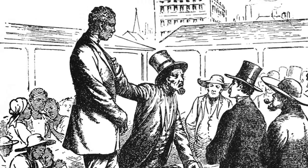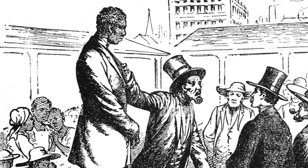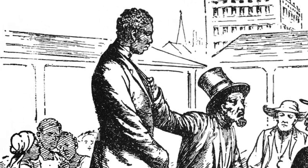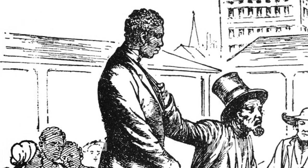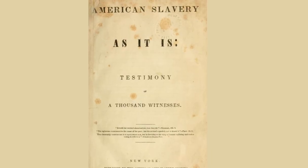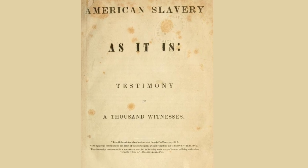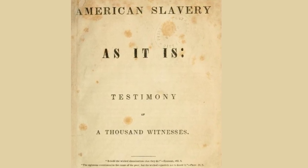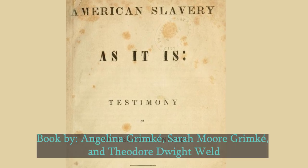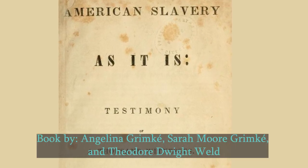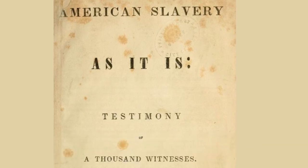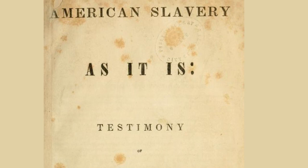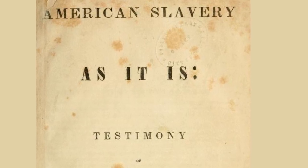Perhaps that is what makes Uncle Tom's Cabin so visceral — the stories of these fictional characters, of Uncle Tom and Eliza, George and Harry, were all too real. Stowe masterfully wove the real-life experiences of self-emancipated people into her story. She used books like American Slavery As It Is: Testimony of a Thousand Witnesses, published by Theodore Dwight Weld and the Grimké sisters, and she also conducted her own interviews with people who had escaped slavery.